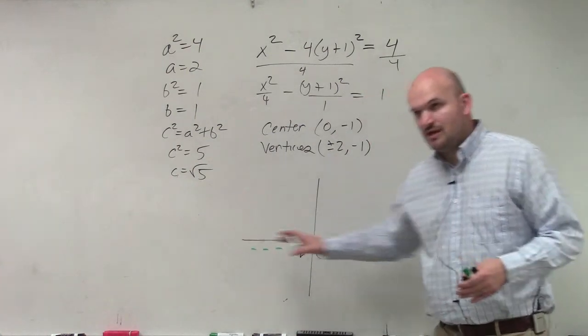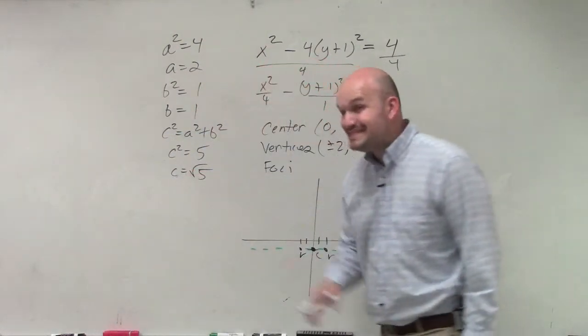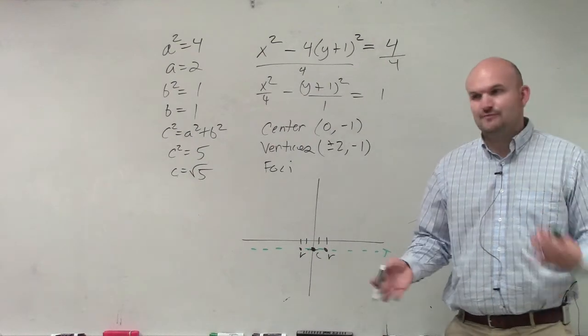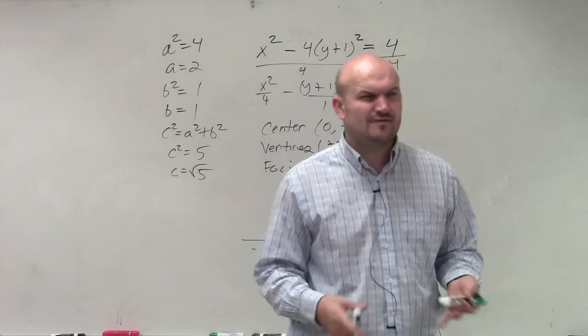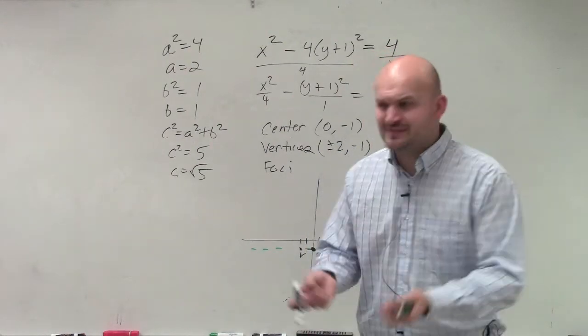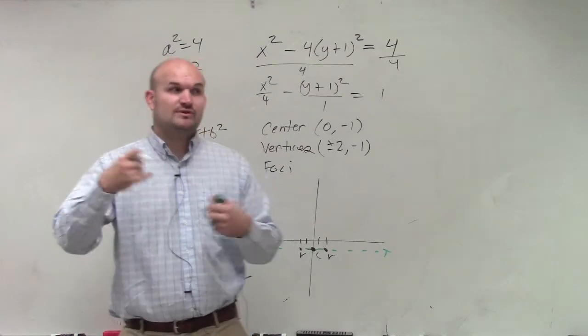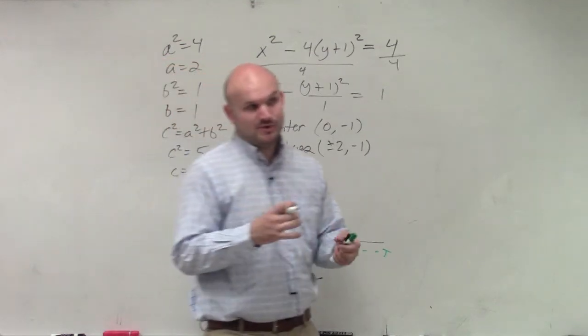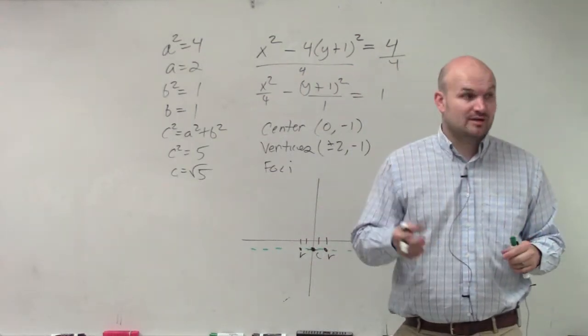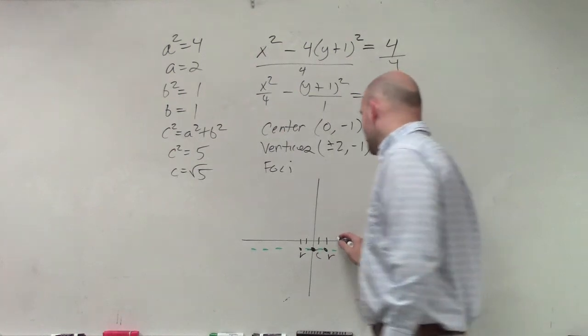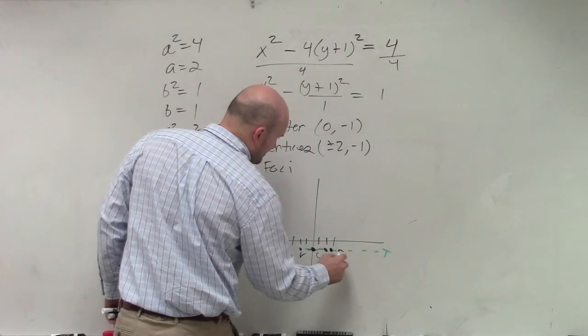My foci also lie on my transverse axis, and that's a distance of c. Now, this kind of confuses people. I'm sure with the calculator you guys would probably type in square root of 5. But in reality, guys, by the time it even takes you to touch your calculator, you know the square root of 4 is 2 and the square root of 9 is 3. So would you agree with me square root of 5 is somewhere in between 2 and 3? You can probably figure that out quicker than it is to grab your calculator. That's all you need to do is just estimate where it should be.